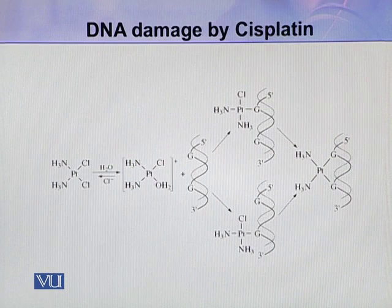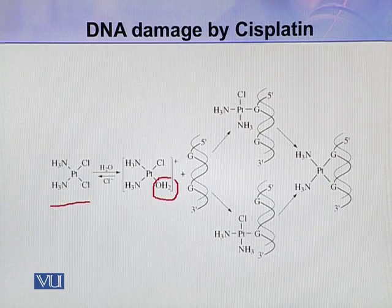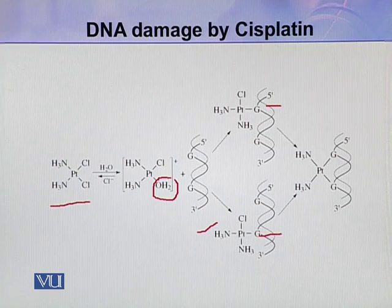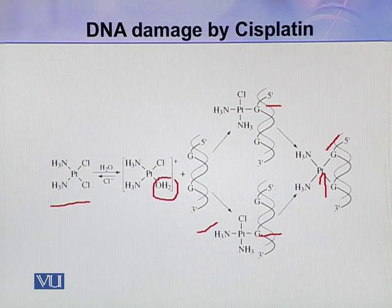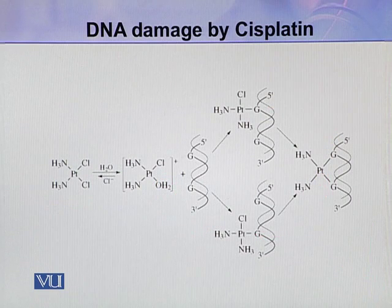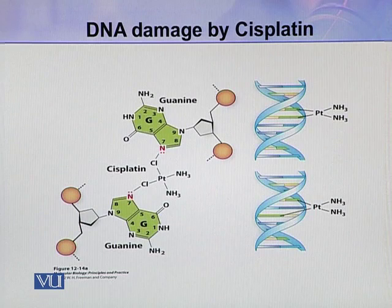Here you can see Cisplatin after activation, with one chloride ligand removed. After this activation it binds with DNA at one site, and after the removal of the second ligand, the platinum can make a linkage with another guanine on the same strand. In this way, Cisplatin forms an intra-strand crosslink between bases on one strand of DNA.